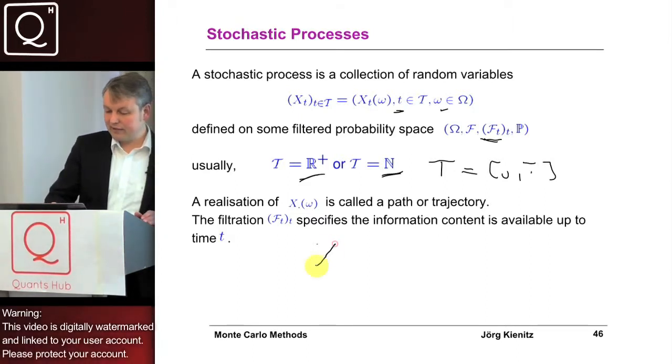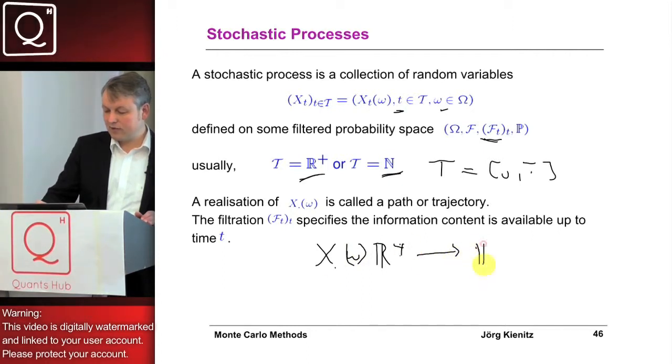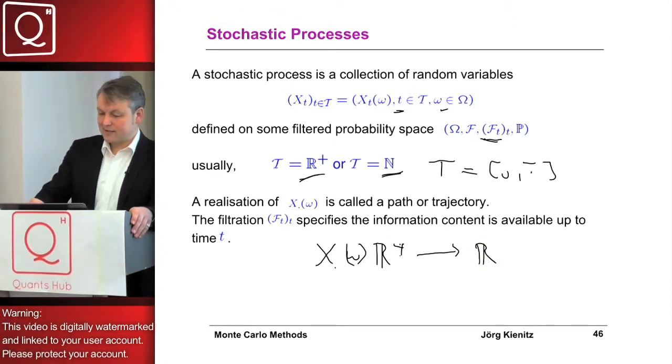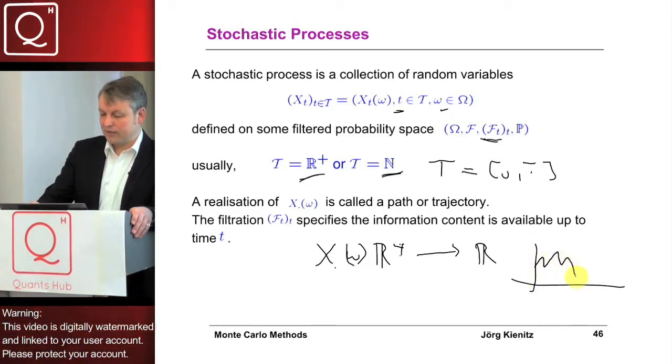For example, if we have the state space to be R plus, we have a function to R, and this is what we know from analysis. This is a kind of function, maybe not a real smooth one, but this is the function, big T in here.